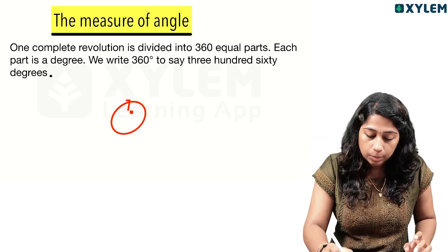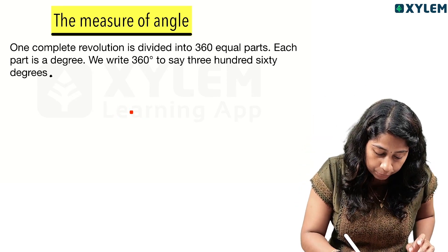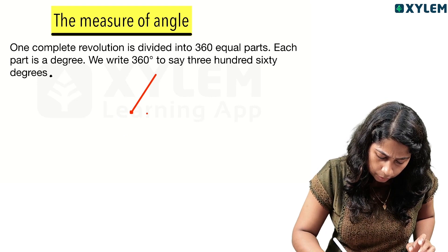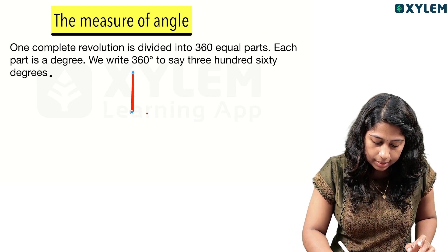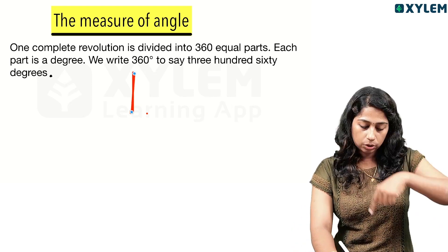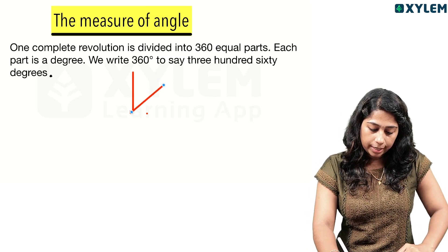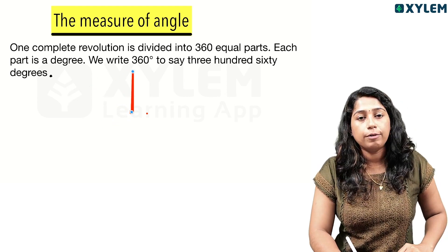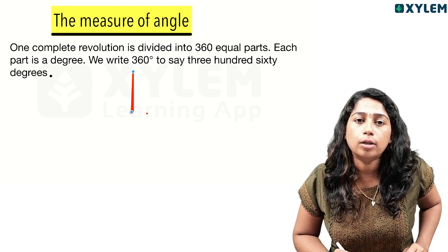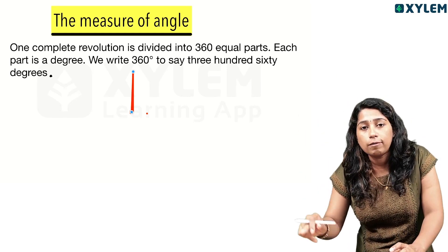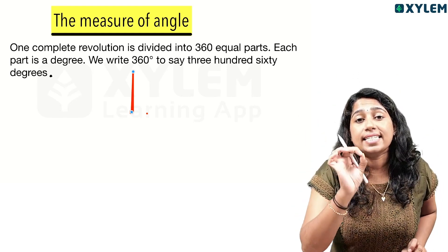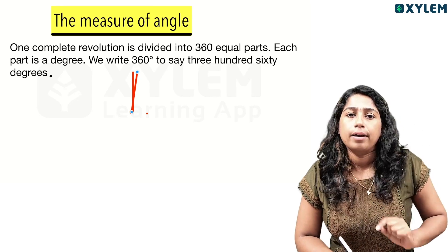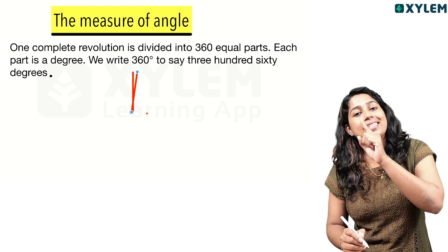If I put a point and draw a line from it, that line starts here. One complete revolution means rotating all the way around — that is 360 degrees. Now, a full revolution is 360 degrees.